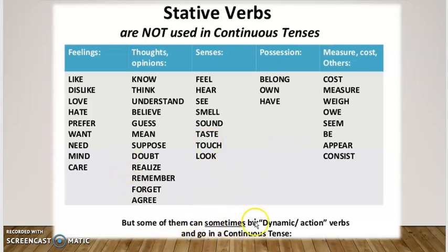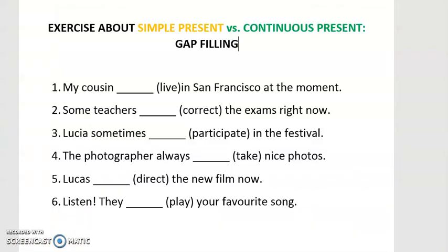Don't forget that some of these verbs can sometimes be dynamic or action verbs and take the continuous tense. Remember that they are generally stative verbs that we don't use in continuous, but some — for example, 'have' — are used in continuous tenses. Remember that English is the language of exceptions.